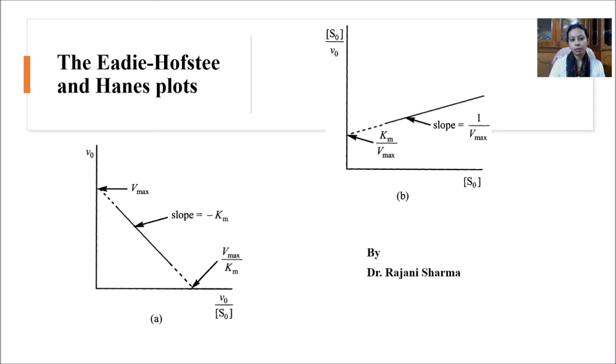To avoid that, Lineweaver-Burk plot was adopted, but in the Lineweaver-Burk plot also there are some drawbacks. To overcome that, Eadie-Hofstee and Hanes plots were used. Before going into this, let us see what was the exact drawback of the Lineweaver-Burk plot so that these plots came into existence.